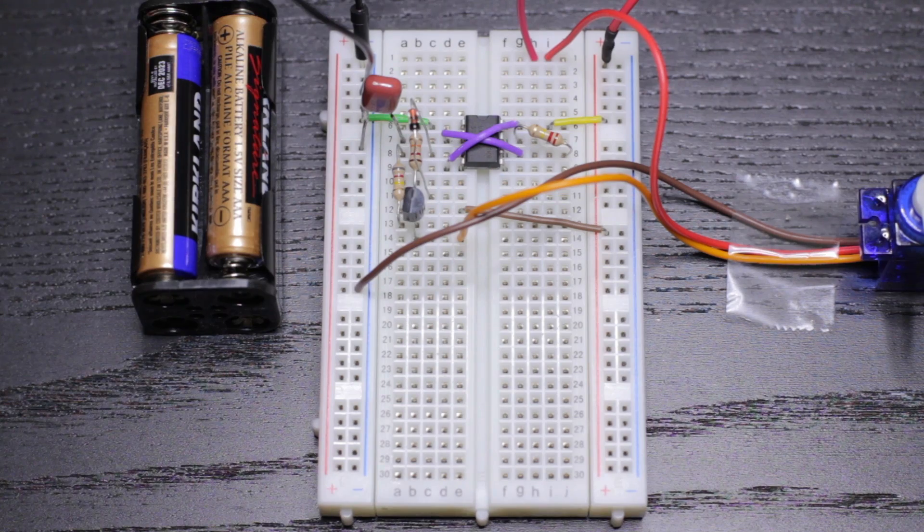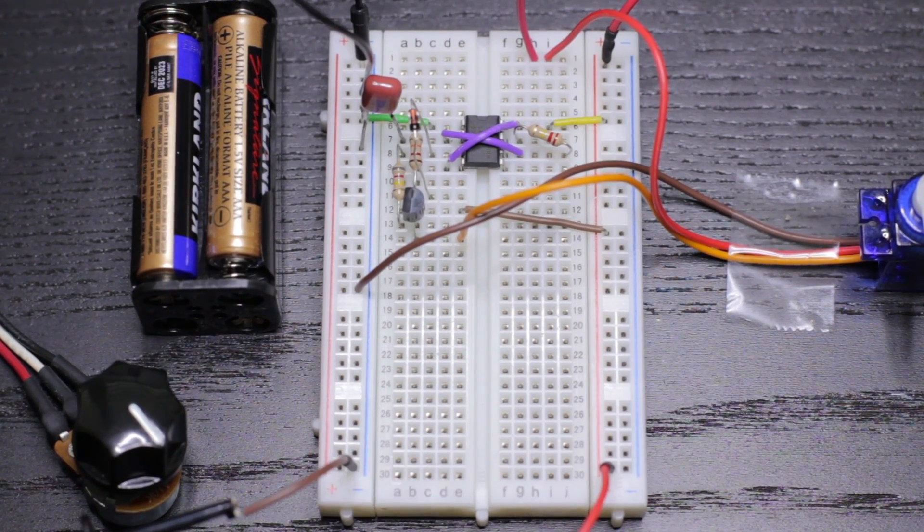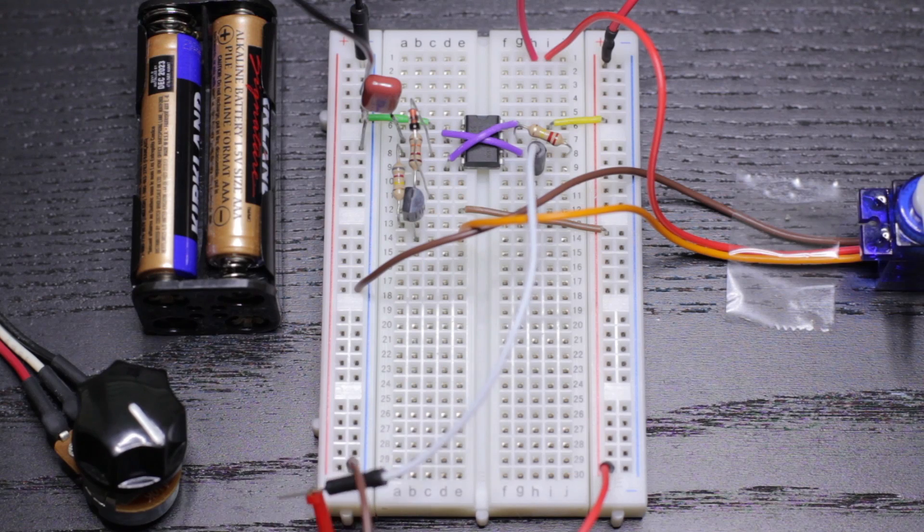Now to control the rotation of the servo we can attach a potentiometer to the control pin, which is pin 5 of the 555.